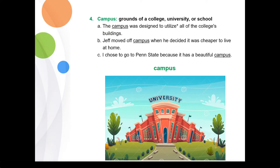'Campus' means the grounds of a college, university, or school. Example one: the campus was designed to utilize all of the college's buildings. Example two: Jeff moved off campus when he decided it was cheaper to live at home. Example three: I chose to go to Penn State because it has a beautiful campus.